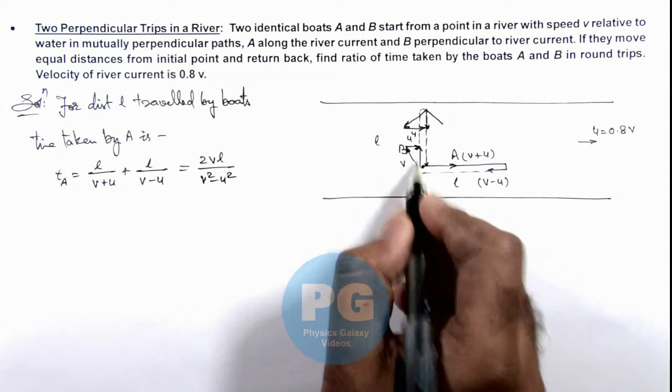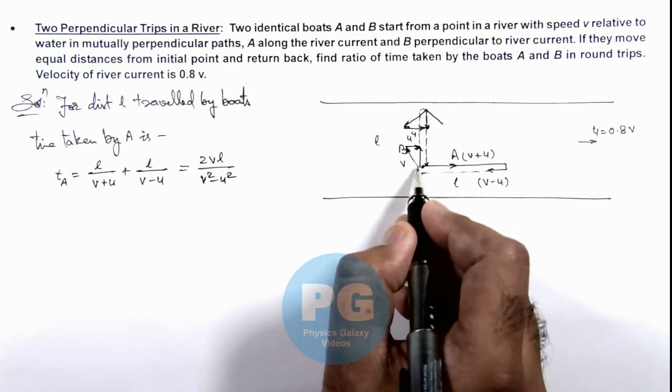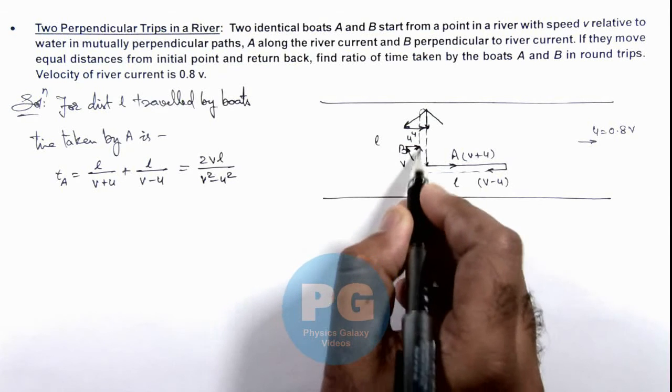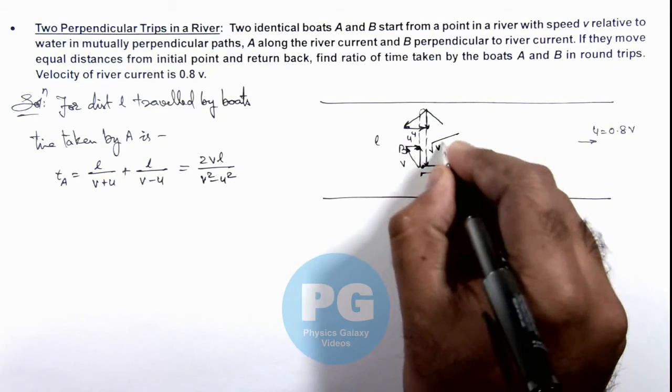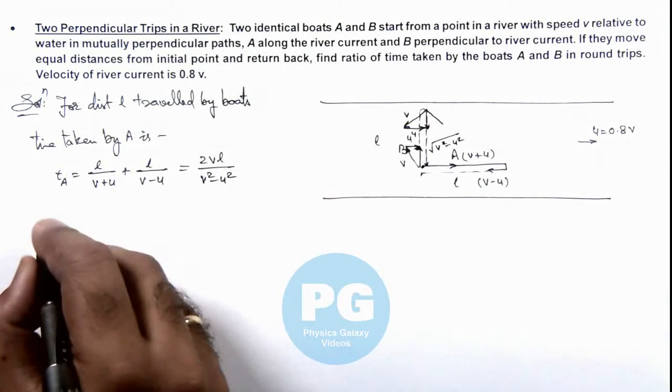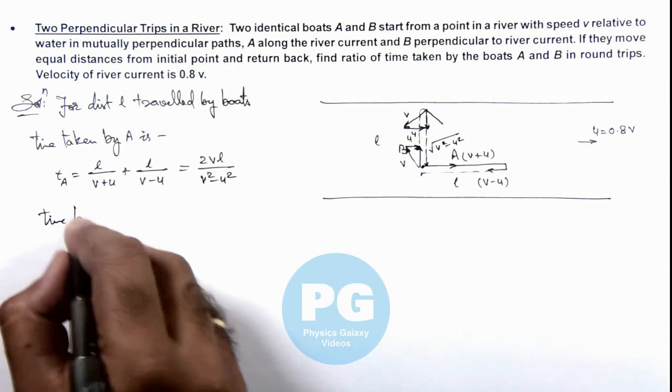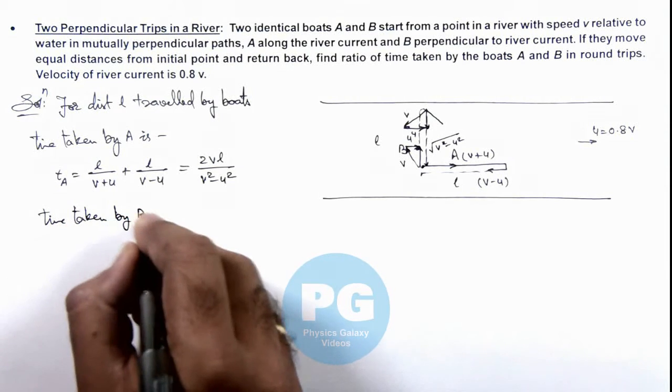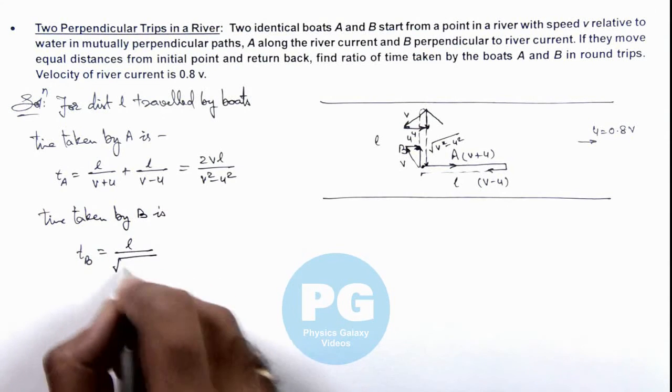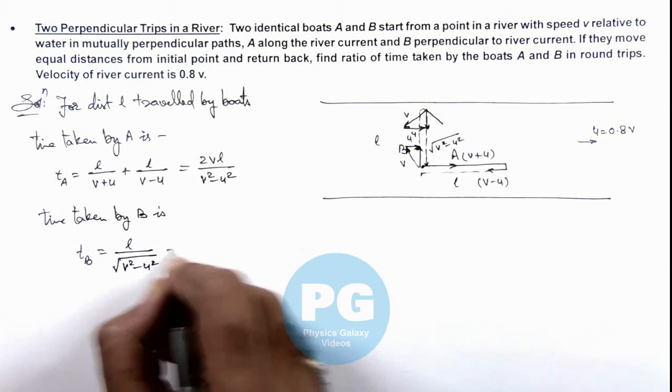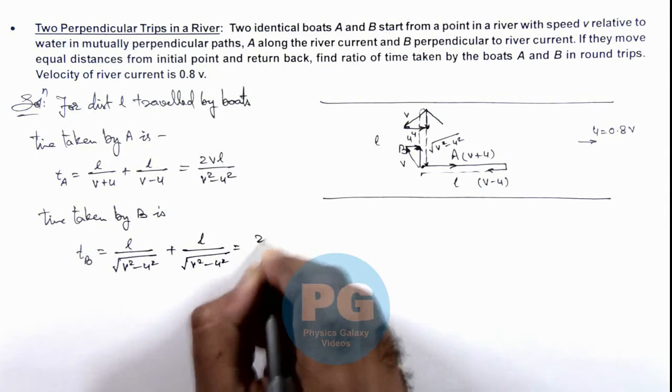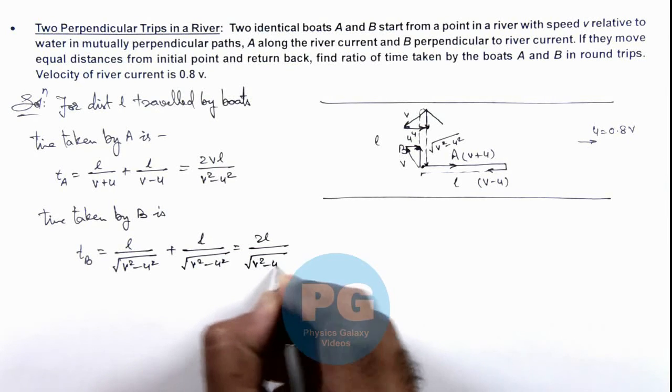Similarly for B, as it is going with speed v and river current speed u vectorially added to it, the resultant will be taken as root of (v squared minus u squared) and the same will be in return path. So we can write the time taken by B is, here t_B can be written as l by root of (v squared minus u squared) plus l by root of (v squared minus u squared), that is 2l by root of (v squared minus u squared).